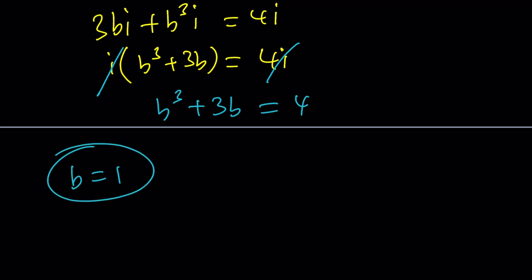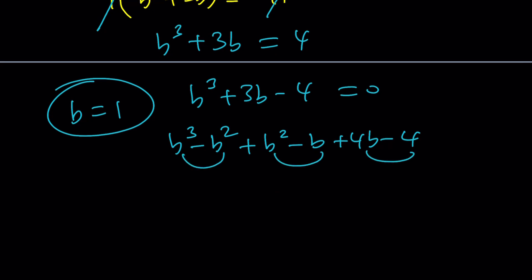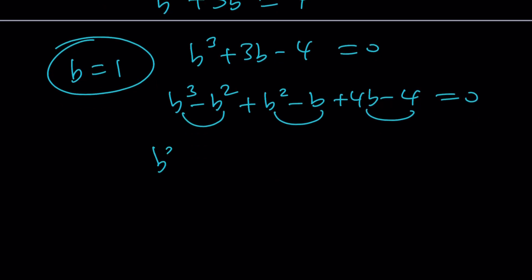And the next step should be dividing this by b minus 1 or manipulating this until we get b minus 1. And some people think that this is too long, but actually, if you get used to it, it should be fairly easy. You can extract b minus 1. It's the same as long division. It's just shorter. (b - 1)(b² + b + 4) = 0.